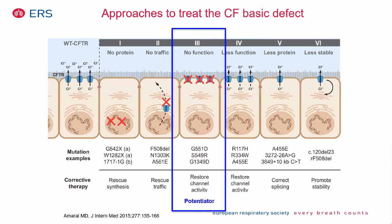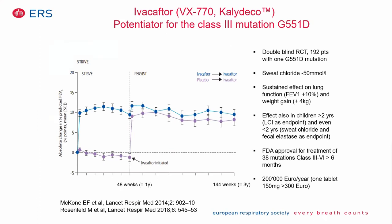A breakthrough came with treatment of class 3 mutations, particularly the G551D gating mutation, where the protein reaches the apical cell surface correctly but does not function. Vertex Pharmaceuticals identified ivacaftor (trade name Kalydeco) through high-throughput compound screening. The drug produces a rapid increase of approximately 10% in percent-predicted FEV1 shortly after starting treatment, and this improvement is sustained over three years. The drug has since been tested in progressively younger children.